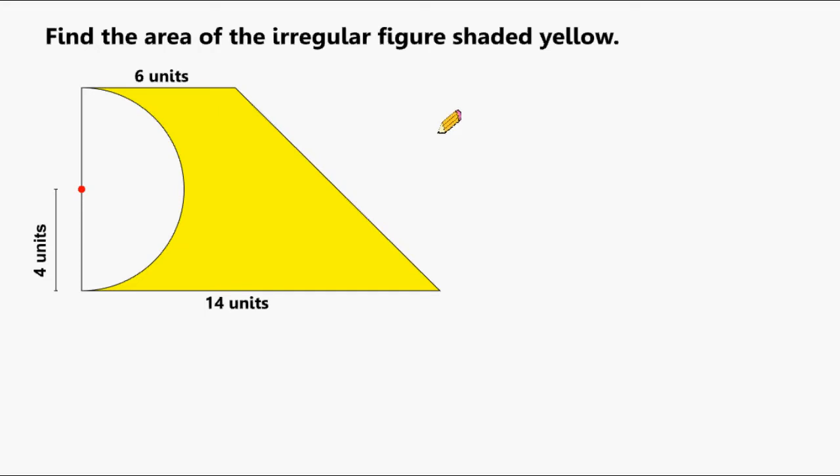We're going to start by writing the formula for the area of a trapezoid, which is b₁ plus b₂ divided by 2 times the height of that trapezoid. And after coming up with that solution, we are going to subtract from it the area of this semicircle.